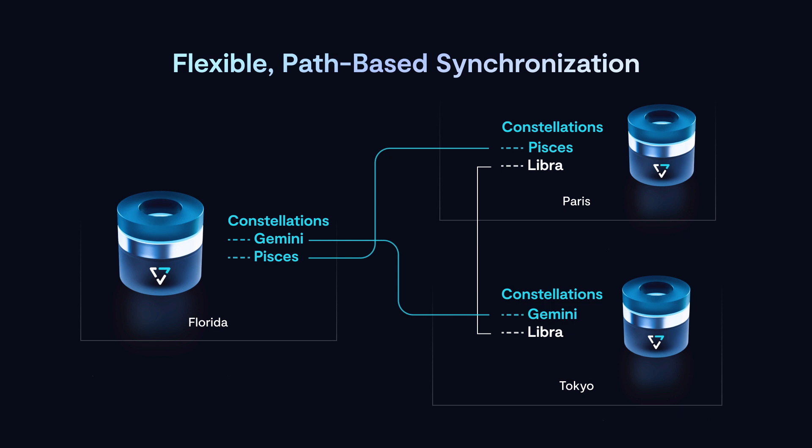Does every site need to peer with every other site and synchronize or mirror each other's data? Absolutely not. It's a very flexible approach to peering different subsets of data sets into additional remote sites. On a path basis — where a path can be a directory, a table, or an object bucket — a remote site can say it wants a view into a specific piece of data, establishing a peering relationship at whatever granularity it chooses. Other sites can come into the network and subscribe to the same paths or different paths, and every site chooses the data they want to view and share across the global data space.